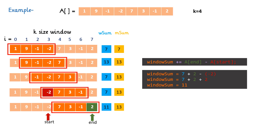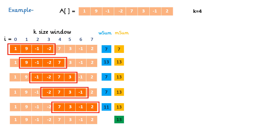Sliding the window one more time: end points to 2 and start points to -2, giving new window sum 11. Now we have reached the end of the array and cannot go beyond that, so we stop the iteration. Finally, the maximum sum of a subarray of size k is 13.